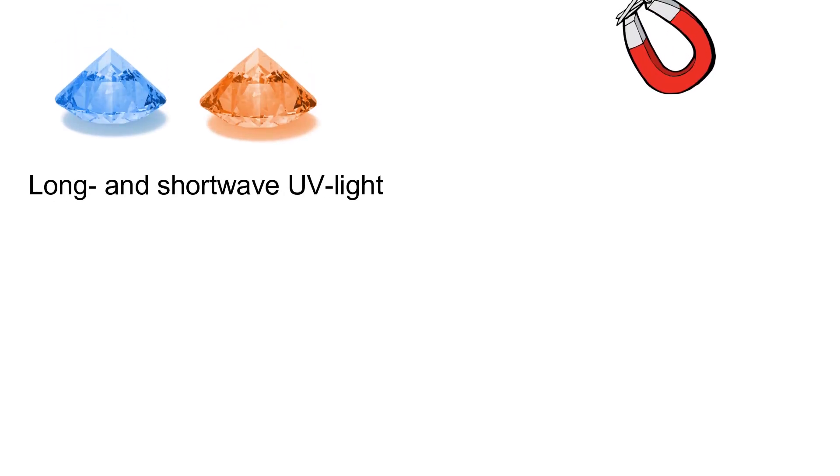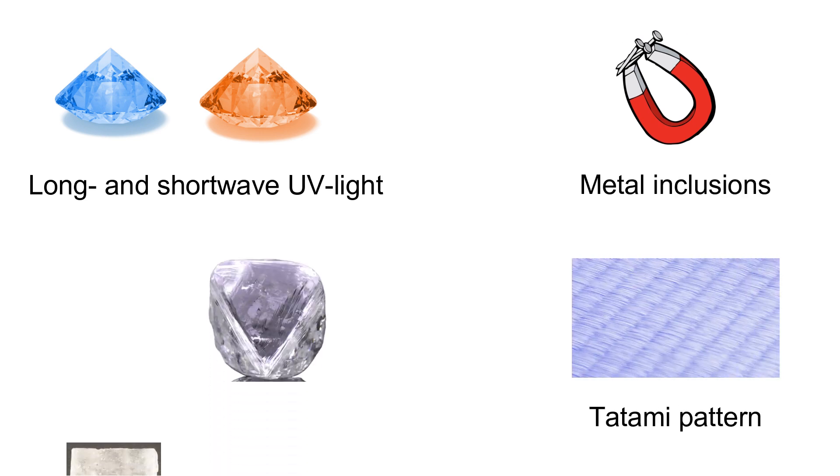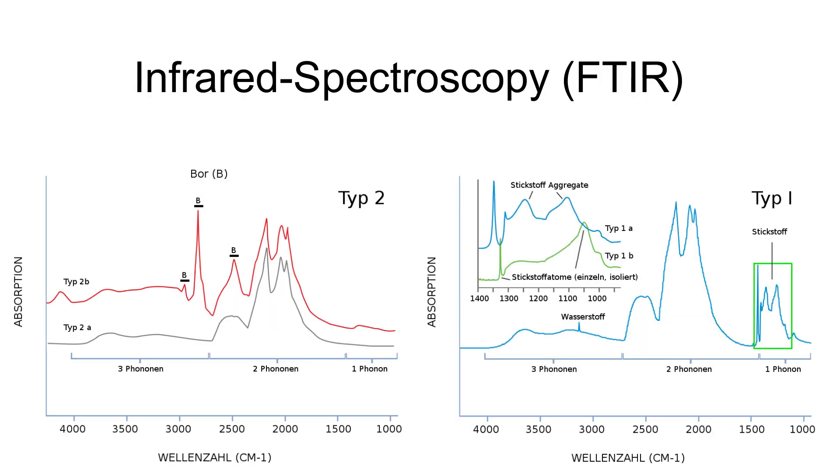Types 1 and 2 can be differentiated using UV light. Each A and B subcategory can also be distinguished using a series of different characteristics. The same is true for synthetic diamonds and their production method as well as artificial enhancements. A detailed description of each, however, would exceed the scope of this video.